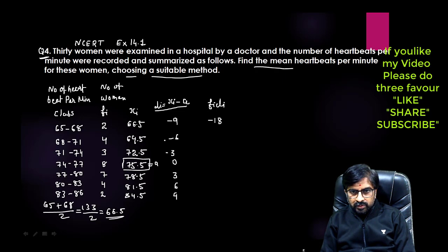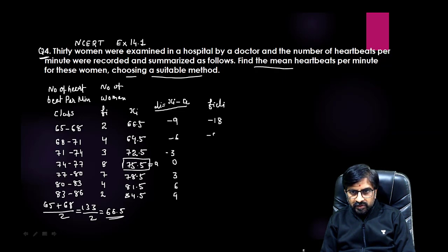Now you need to multiply fi into di. 2 times -9 is -18, 4 times -6 is -24, 3 times -3 is -9, 8 times 0 is 0. You can see how the numbers are small. If we used direct method, the calculation would be much bigger. Now 7 times 3 is 21, 4 times 6 is 24, and 2 times 9 is 18. You need to add them but first you can see -18 and +18 directly cancel.